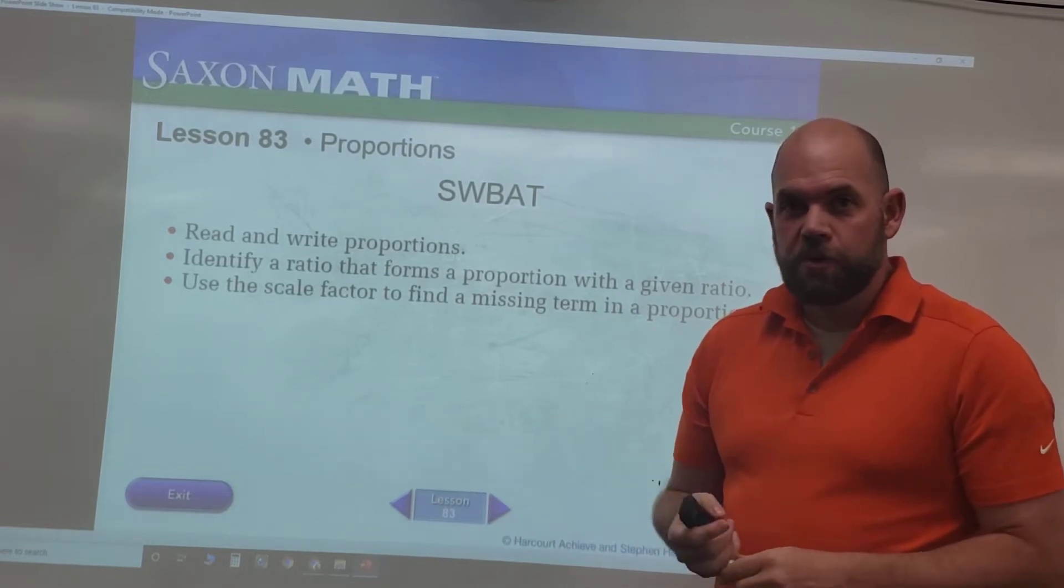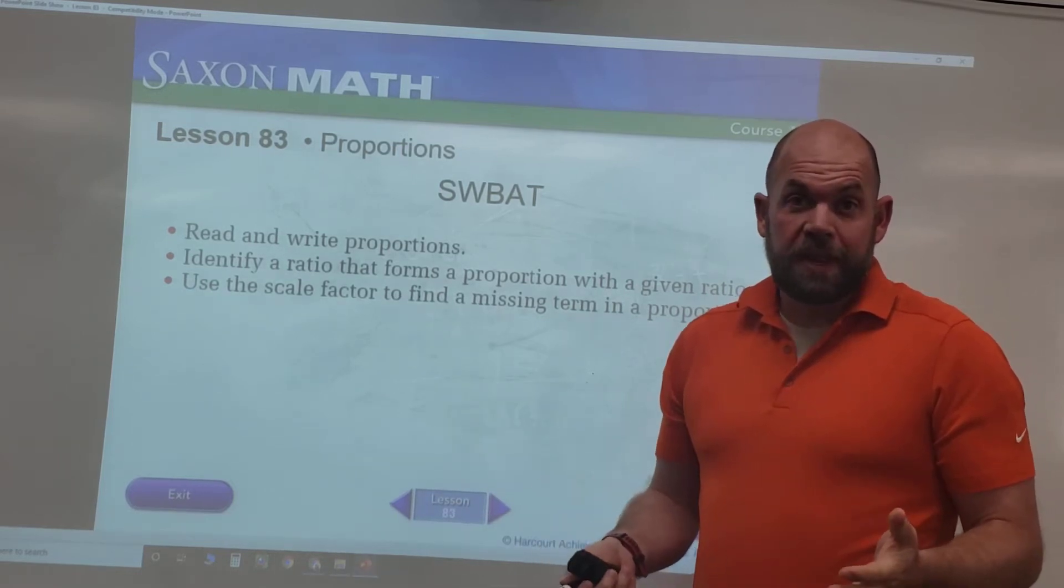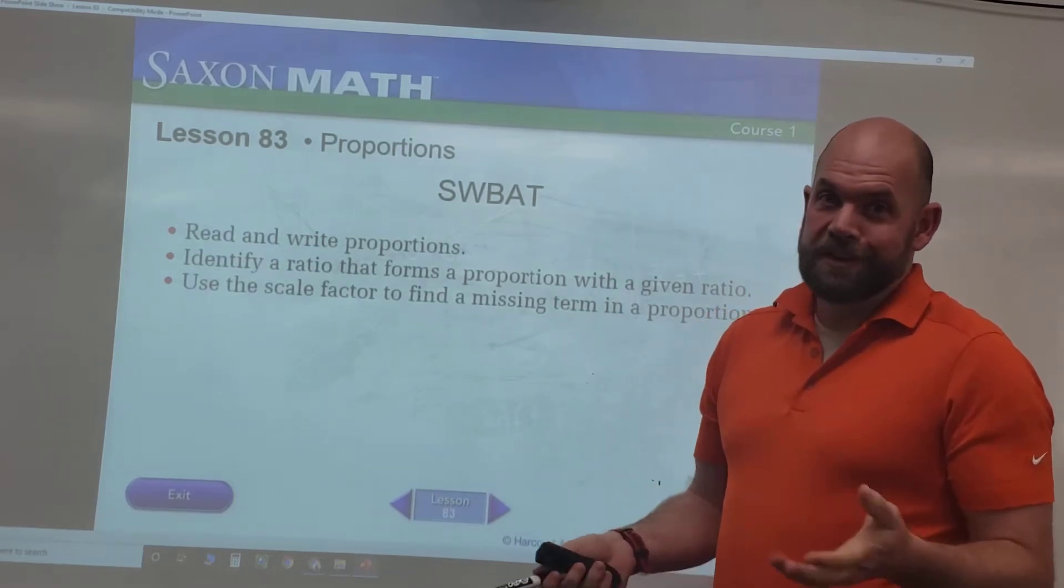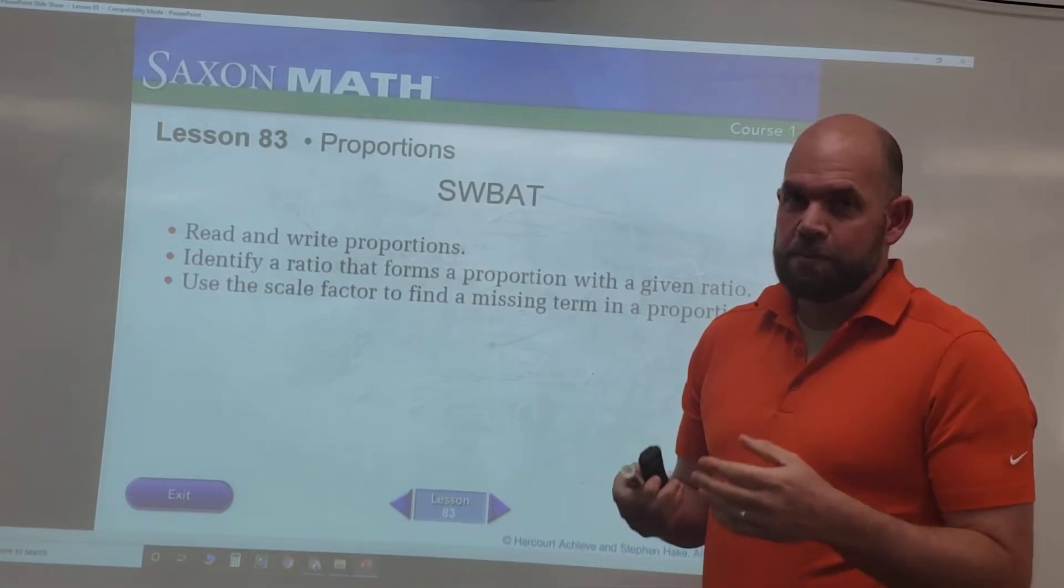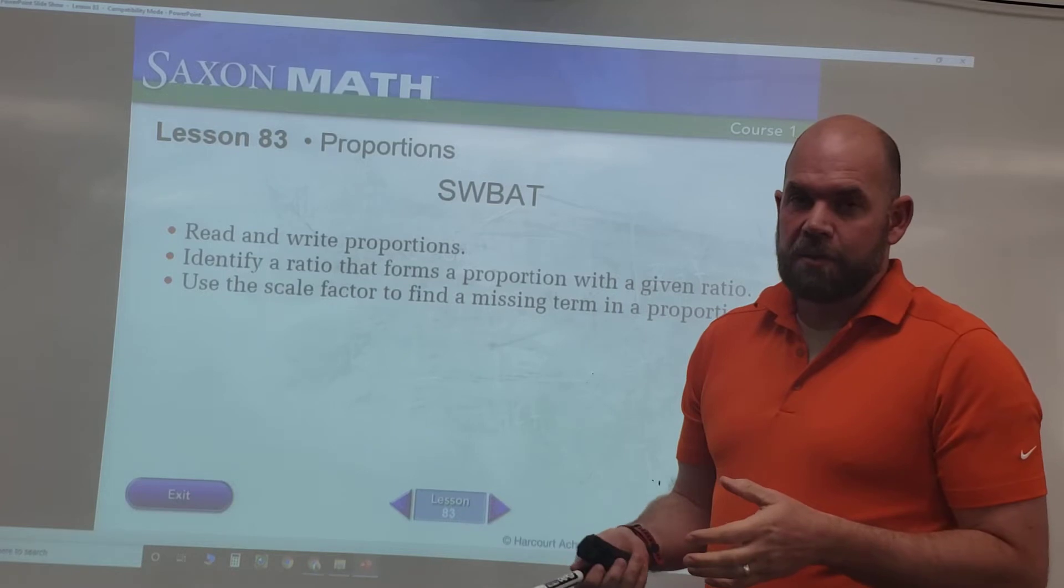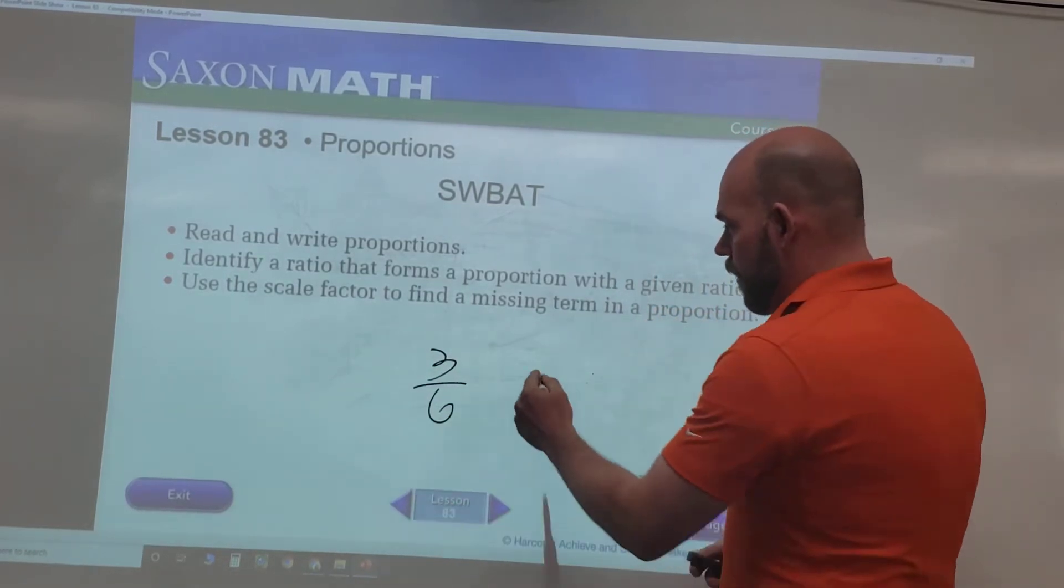So we've done proportions in the past. We've talked about like rolling the dice, and if it was an even roll, that would be three out of the six options, so we would say it's three of six or we might write that as three of six.